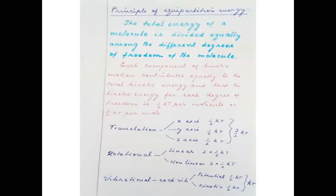Even quantum mechanics is trying to relate these three physical entities — energy, time, and space. When you discuss energy, how the energy is getting divided among various modes of energy possessed by bodies is very important. The Principle of Equipartition of Energy explains how the total energy of the system is divided into various modes of energies possessed by the system.